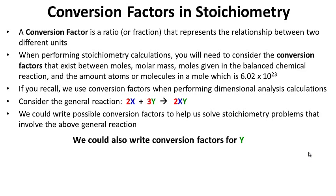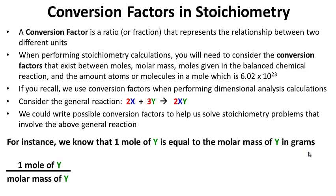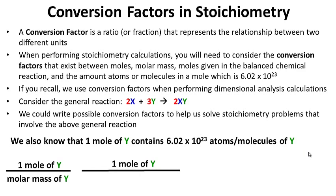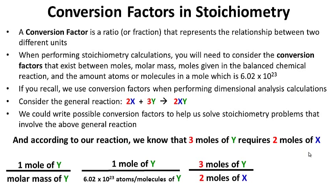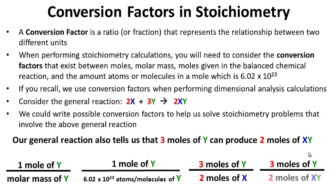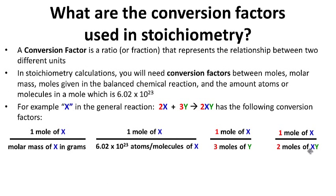We could also write conversion factors for Y. One mole of Y equals the molar mass of Y in grams. One mole of Y contains 6.02 × 10²³ atoms or molecules of Y. Three moles of Y requires two moles of X, and three moles of Y can produce two moles of XY according to our chemical reaction. What are the conversion factors used in stoichiometry? Go ahead and pause this while you write.